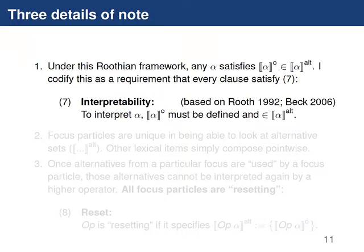I'd like to highlight three points about this approach to the interpretation of focus. First, under this Rooth-ian framework, for any syntactic object alpha, the ordinary semantic value is always in the alternative set. I'm going to codify that as a requirement that every clause satisfy interpretability, defined in example seven: to interpret alpha, the ordinary value must be defined and be in the set of alternatives.